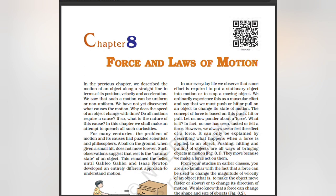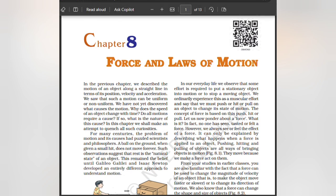Hello, my dear students. Welcome to Teacher at Home. Today's class we are going to learn Chapter 8: Force and Laws of Motion. In the previous chapter we described the motion of an object along a straight line in terms of its position, velocity and acceleration. We saw that such motion can be uniform or non-uniform. We have not yet discovered what causes the motion — why does the speed of an object change with time?